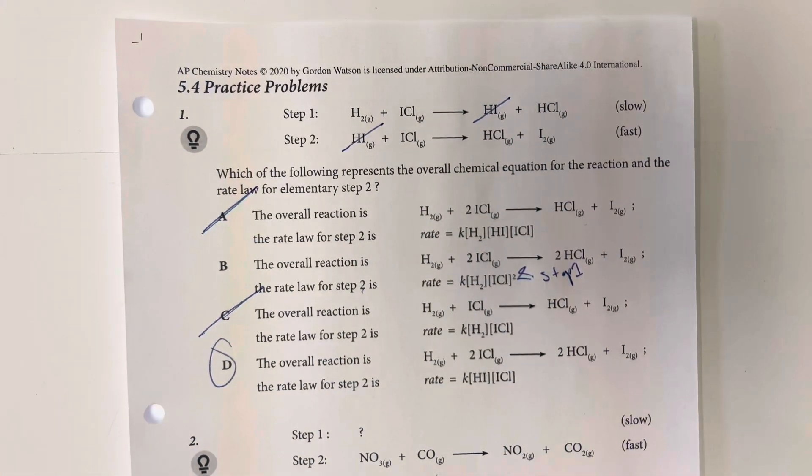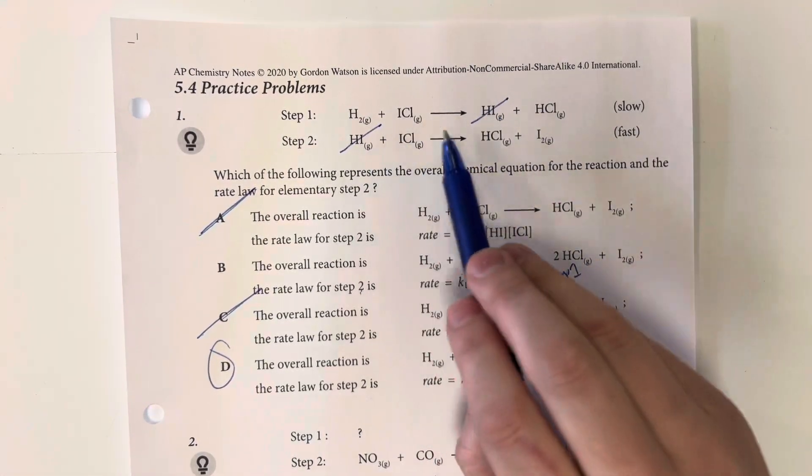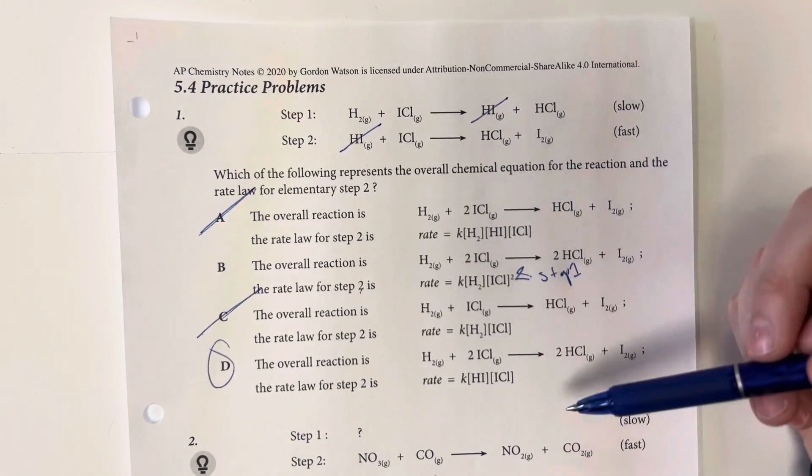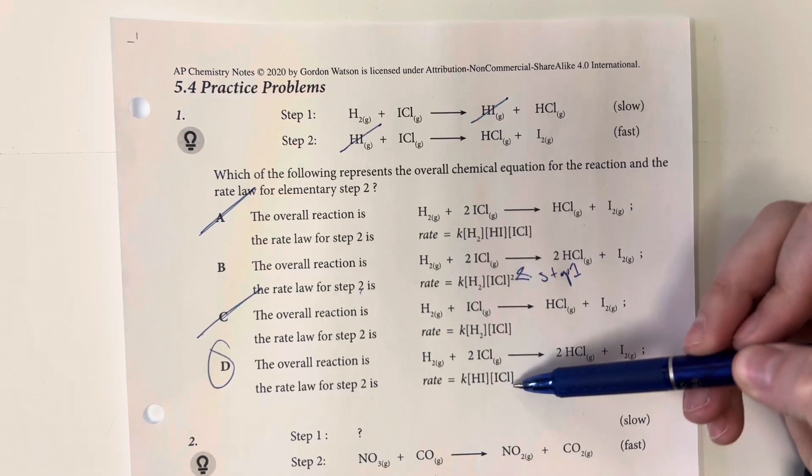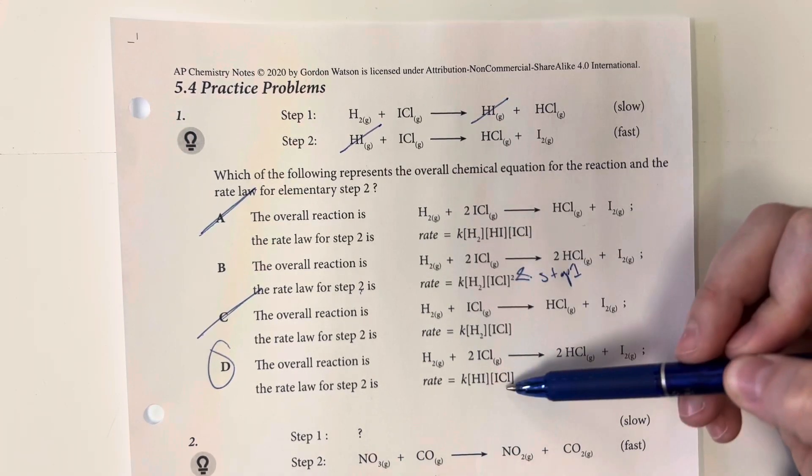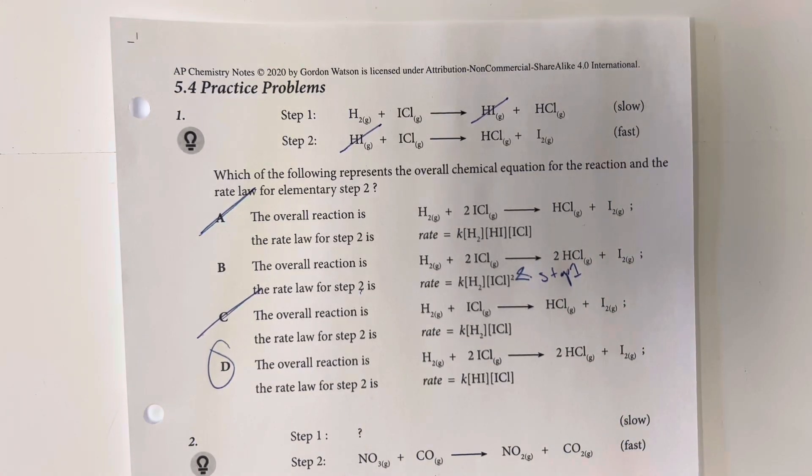So option choice D is the only one that matches the simplified equation, and also for the rate law, only includes the reactants in step 2 as my rate law.